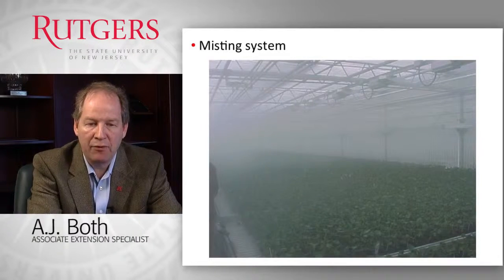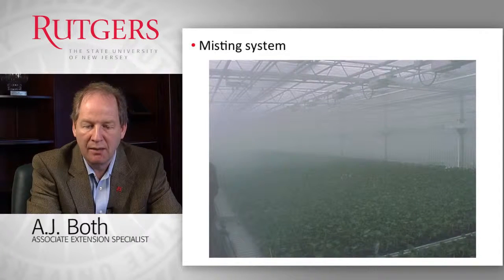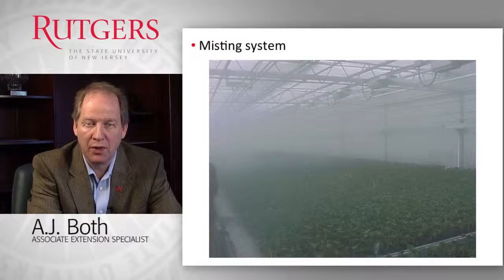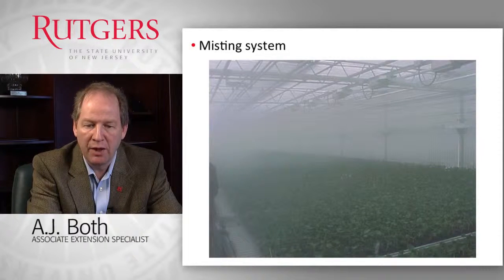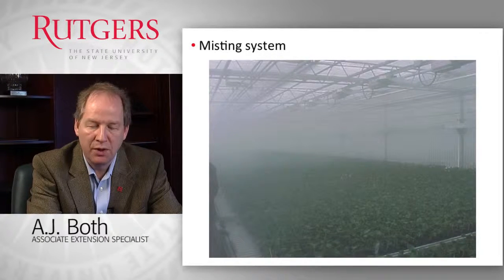Here is an example of what a misting system looks like — a pretty foggy environment inside a greenhouse. Mostly, as mentioned, it is used for providing a very moist environment for rooting cuttings, but it could also be used for evaporative cooling purposes.